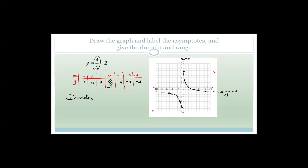Now we need to look at the domain and range. The domain: do you agree that the only values this graph does not work for are where x equals zero? Everywhere else the graph is true. It carries on forever but can't cross the x equals zero line. So the domain is x is an element of real values, but x cannot equal zero. Similarly with the range — the range is true for every y value except the asymptote. This graph does not exist at y equals minus two. So y cannot equal minus two.